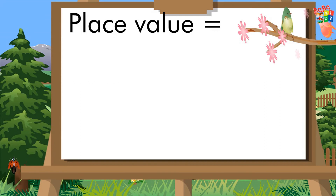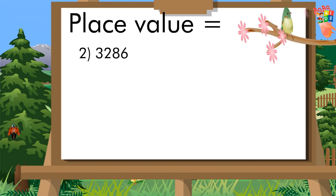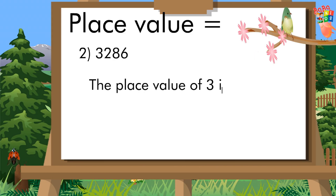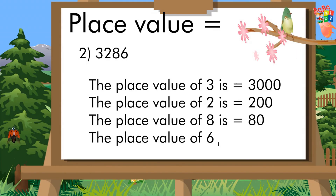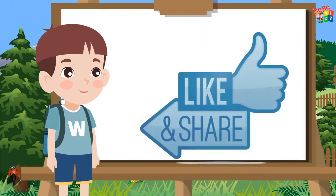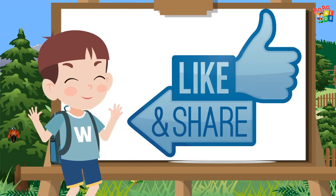One more example: 3286. Find the place value of each digit. The place value of 3 is 3000, the place value of 2 is 200, the place value of 8 is 80, and the place value of 6 is 6. If you like my video, please like and subscribe. Thank you.